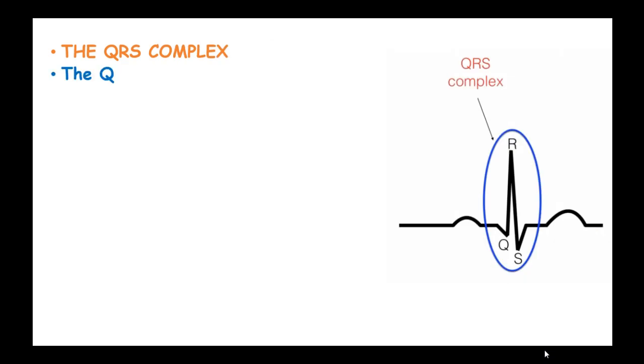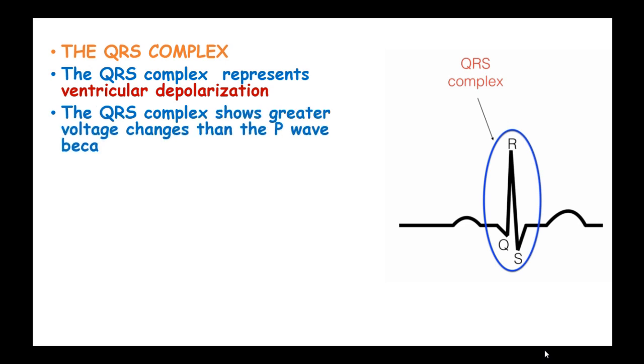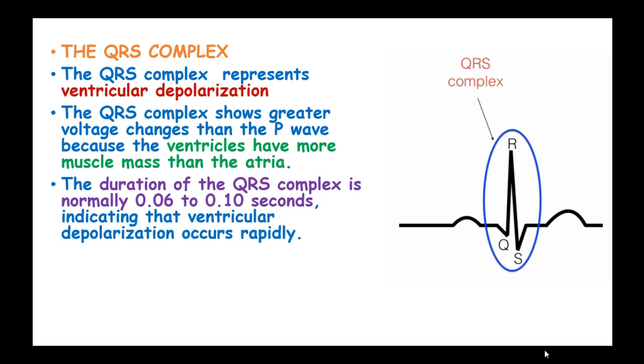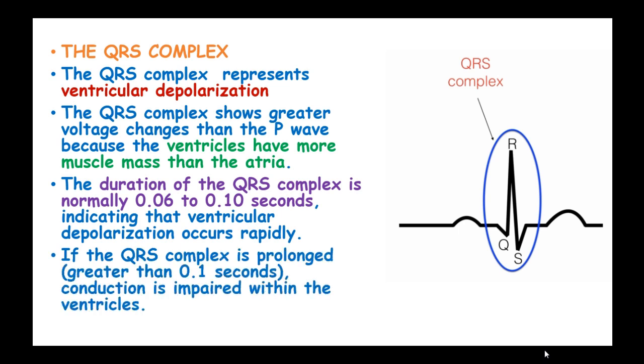The QRS complex. The QRS complex represents ventricular depolarization. This QRS complex shows a greater voltage change than the P-wave because the ventricles have more mass than the atria and contract more strongly. The duration of the QRS complex is normally 0.06 to 0.10 seconds, indicating that ventricular depolarization occurs rapidly. If the QRS complex is prolonged, that is greater than 0.1 seconds, conduction is impaired within the ventricles.